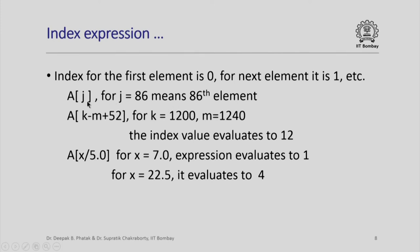An index for first element is 0, next element is 1, and so on. For example, a[j] is a valid expression. For j equal to 86, it will mean 86th element. Suppose I use an expression k minus m plus 52, and if k is 1200, m is 1240, then the index value evaluates to 12.